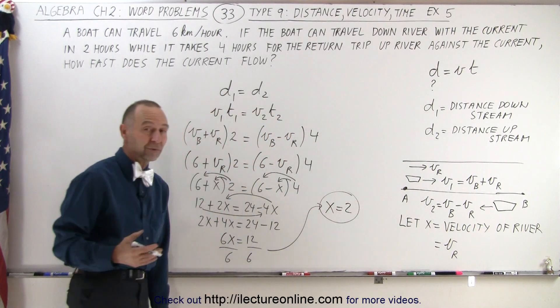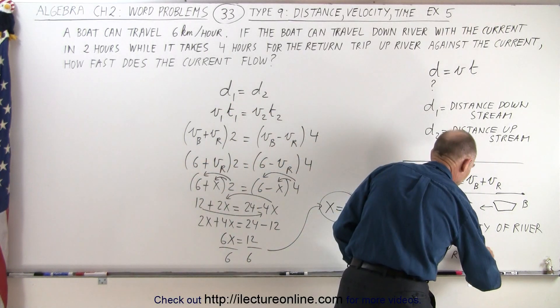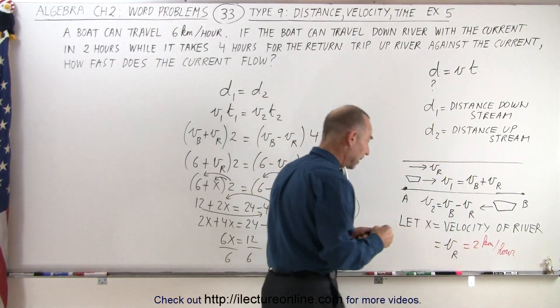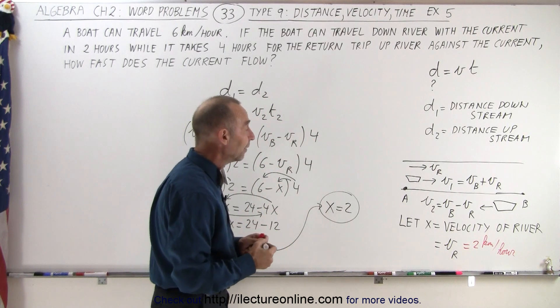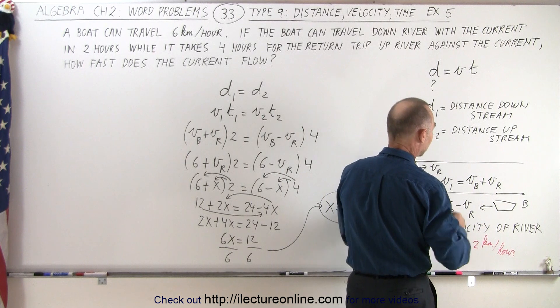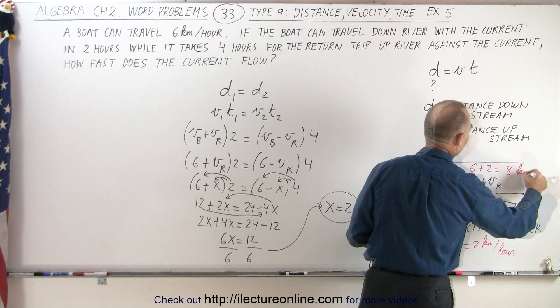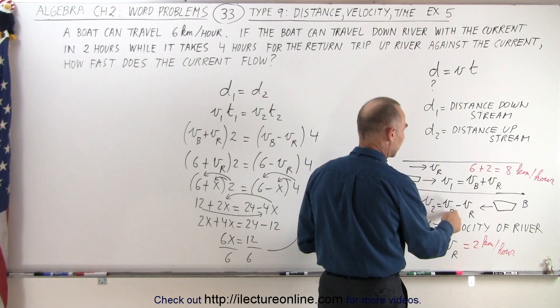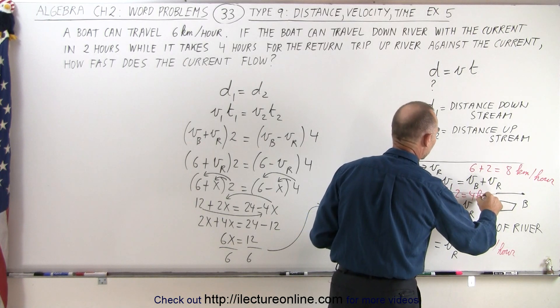And since x represented the velocity of the river, that means the velocity of the river is equal to 2 kilometers per hour. Now we can do a check. If the velocity down the river is the velocity of the boat plus the velocity of the river, that gives us a speed of 6 plus 2, which is 8 kilometers per hour. And if we go back in the other direction, it's the velocity of the boat minus the velocity of the river, which would be 6 minus 2, which is 4 kilometers per hour.